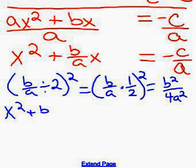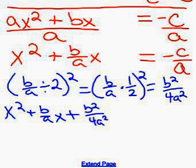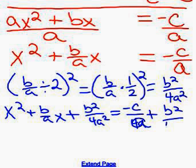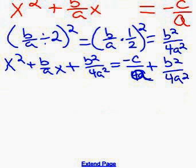So our formula now becomes x squared plus b over ax plus b squared over 4a squared equals negative c over a plus b squared over 4a squared. So we've added b squared over 4a squared to both sides.